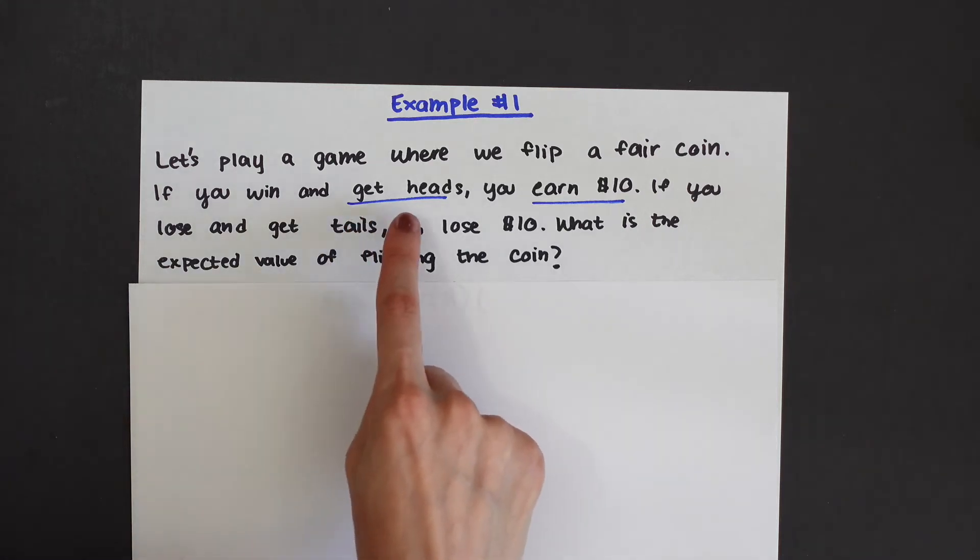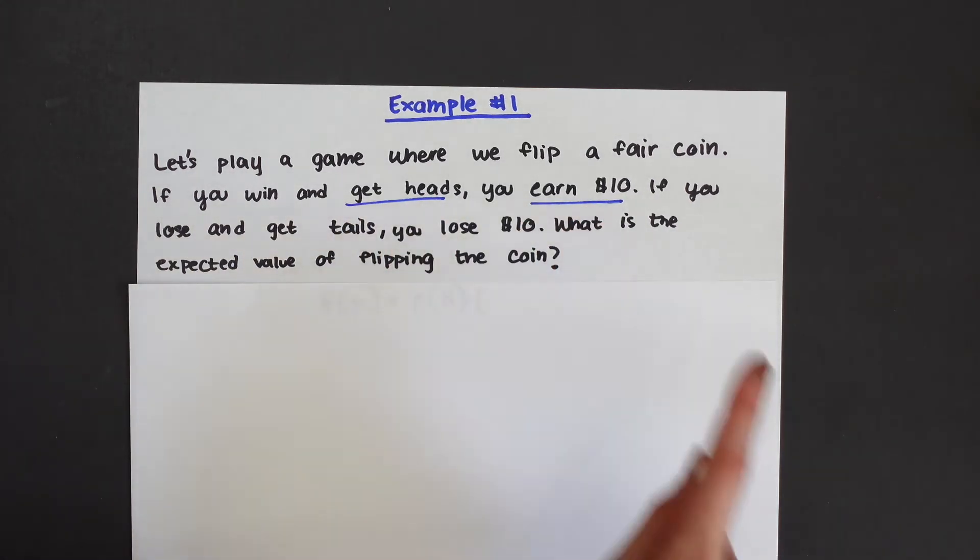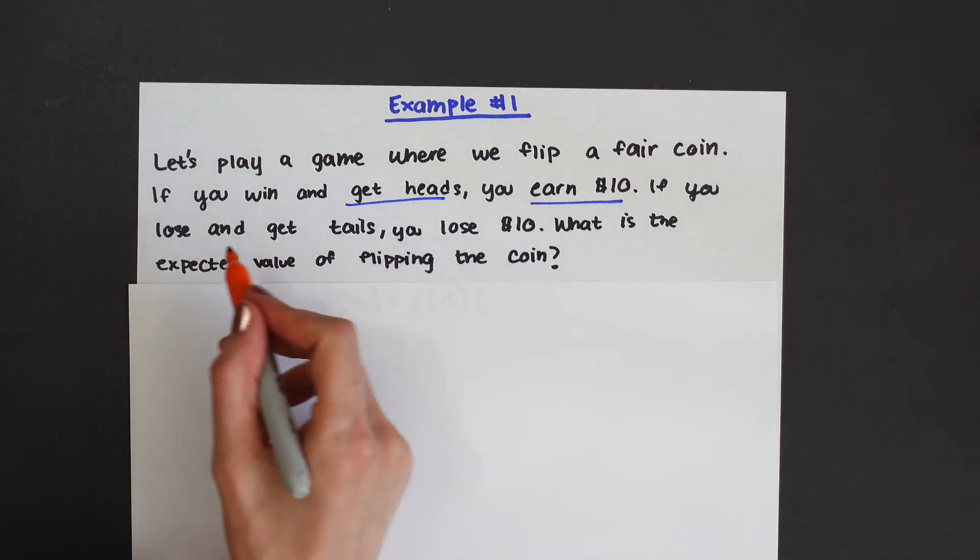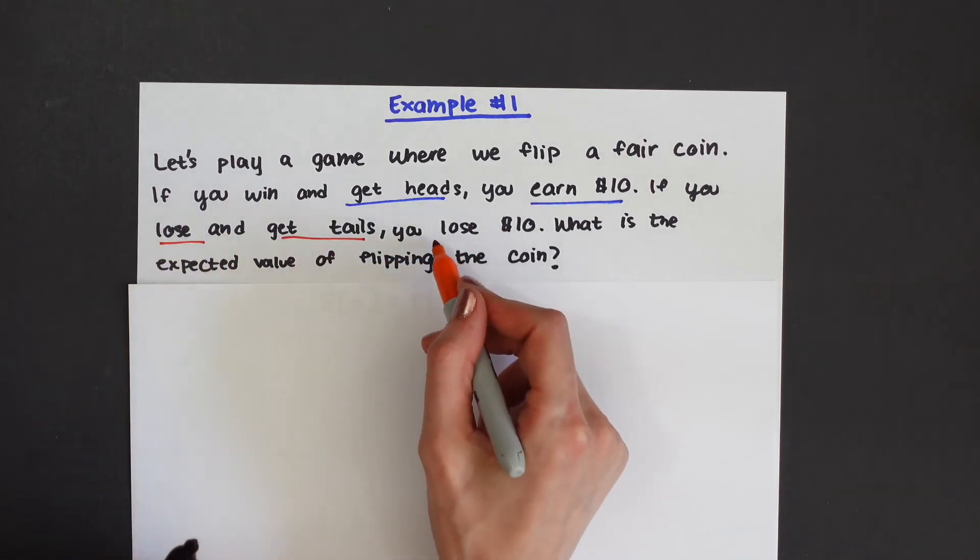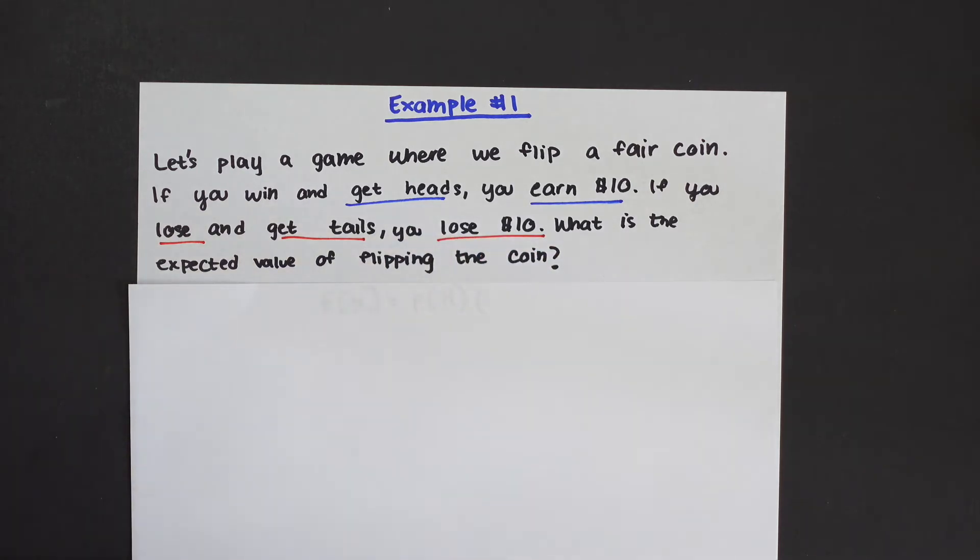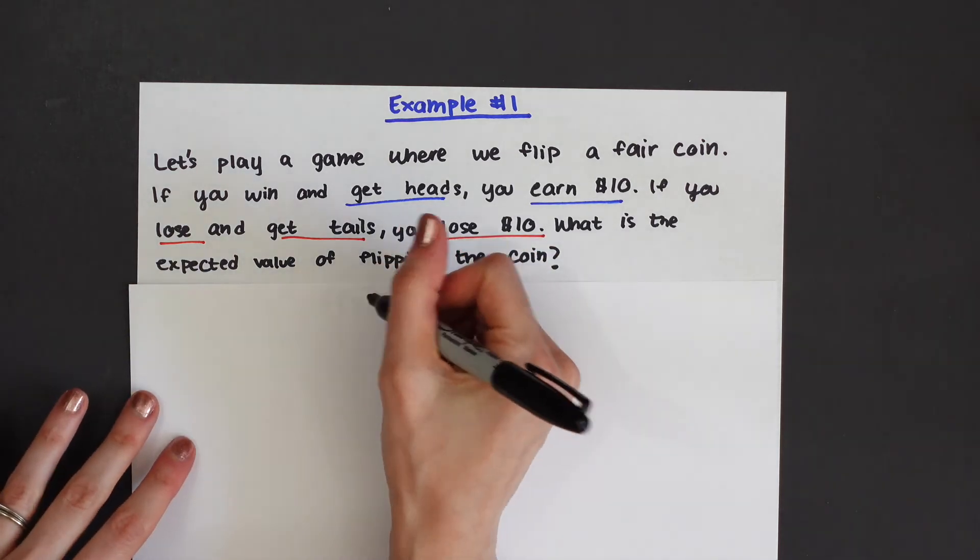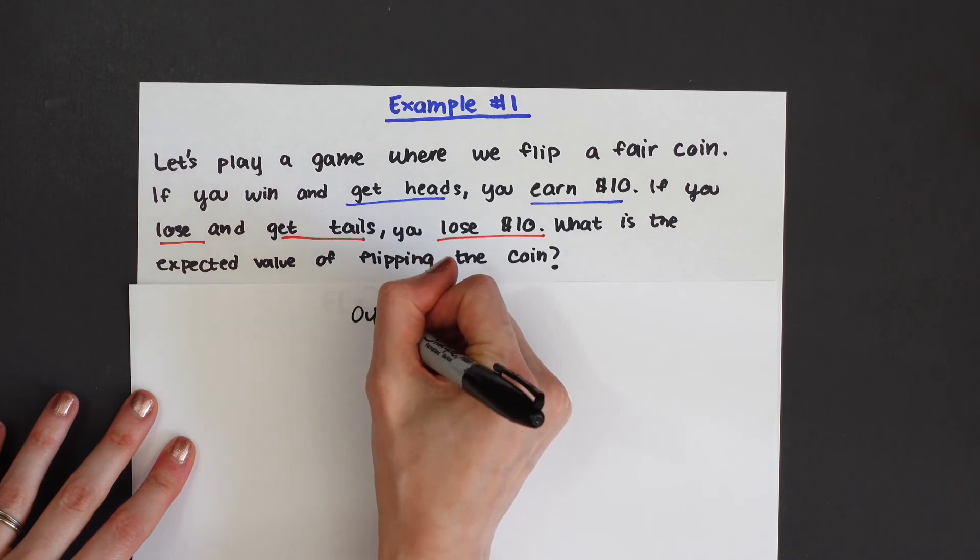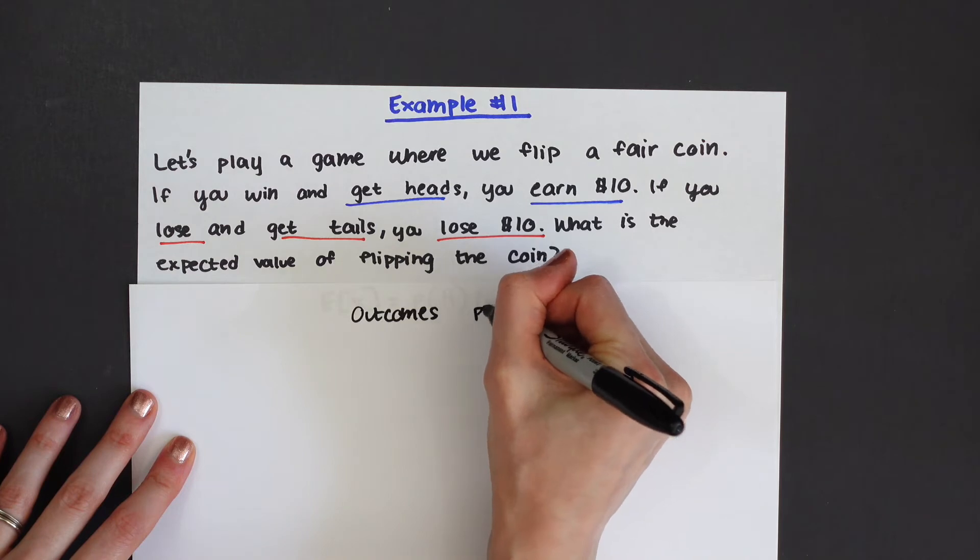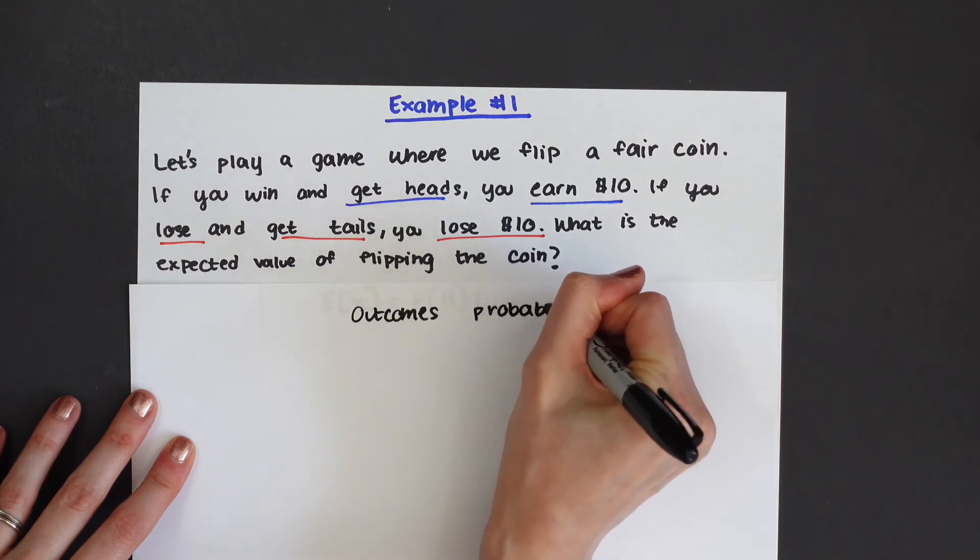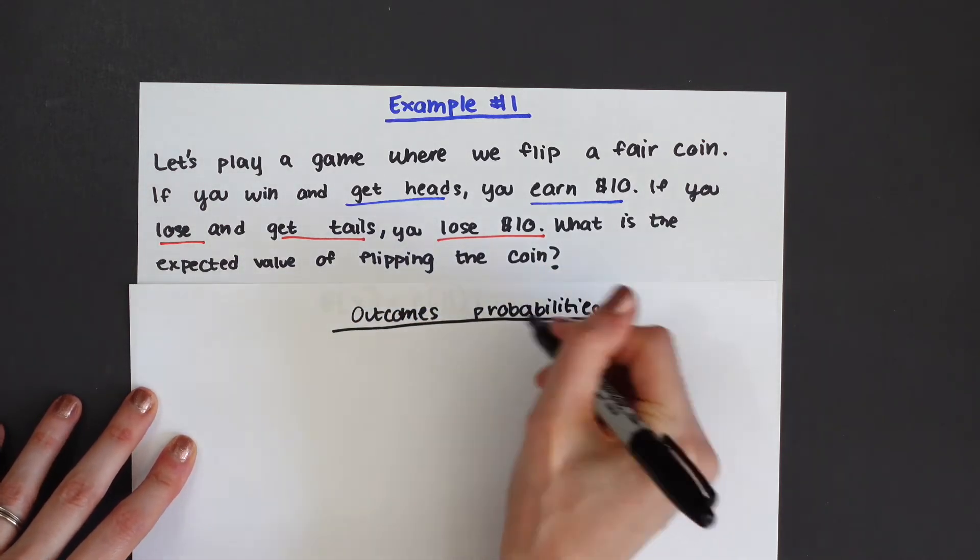Notice we have if you win and get heads you earn ten dollars and if you lose you get tails you lose ten dollars. So let's write out our probability distribution, our outcomes, and the probability of getting each.